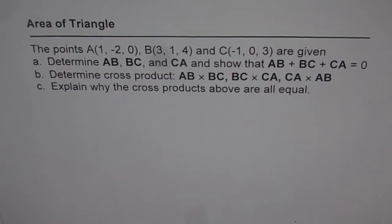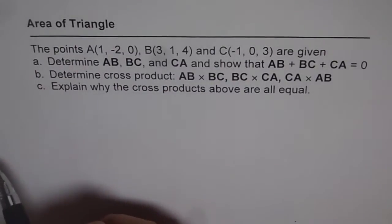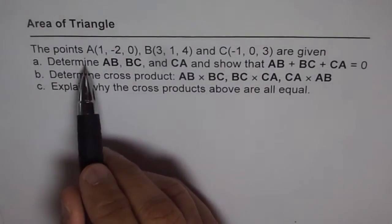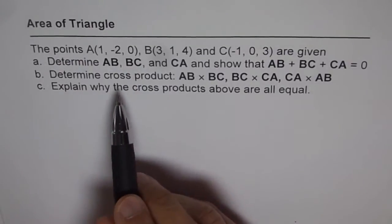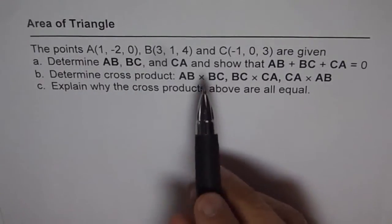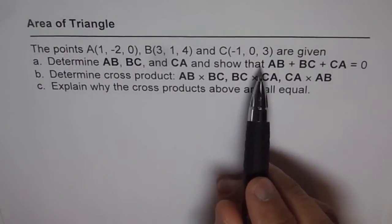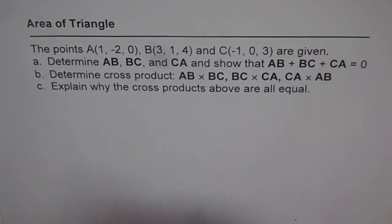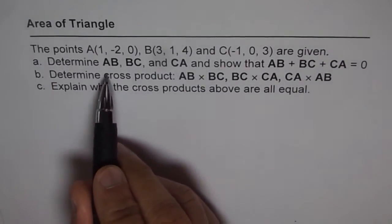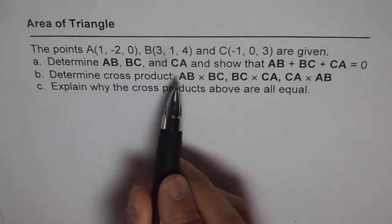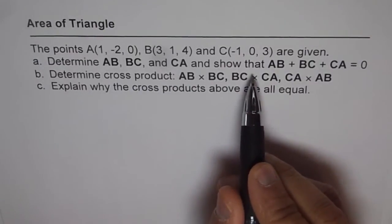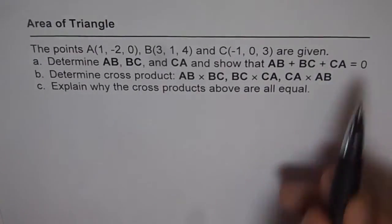Now we have learned all the concepts about cross product, let's apply them. Here is an excellent example to apply and gain confidence. The title is Area of Triangle. The points are A(1, -2, 0), B(3, 1, 4), and C(-1, 0, 3). Determine vectors AB, BC, and CA, and show that the sum of these vectors is 0.